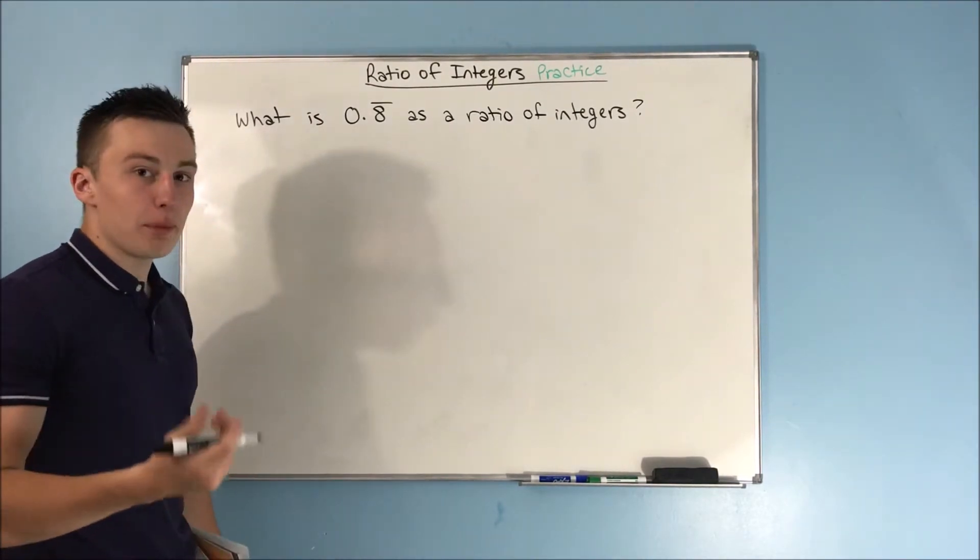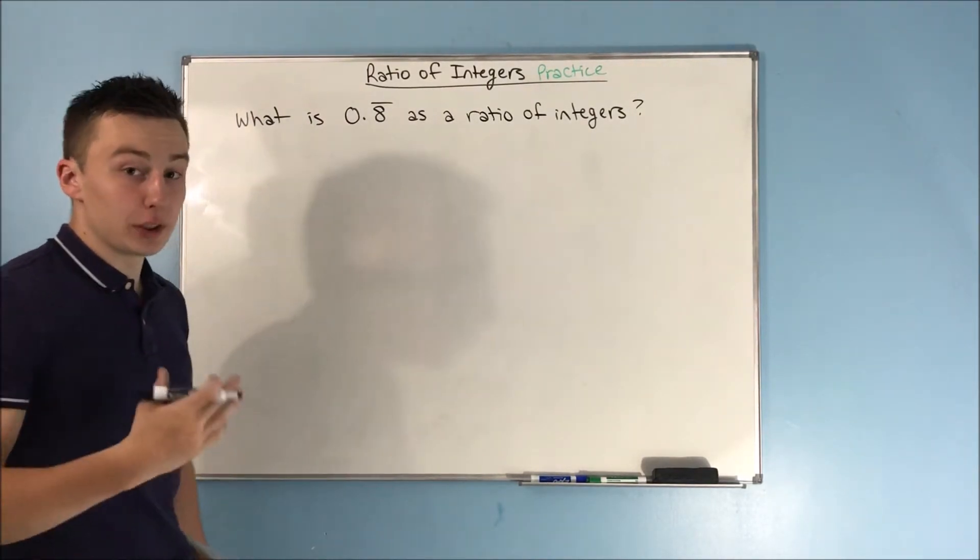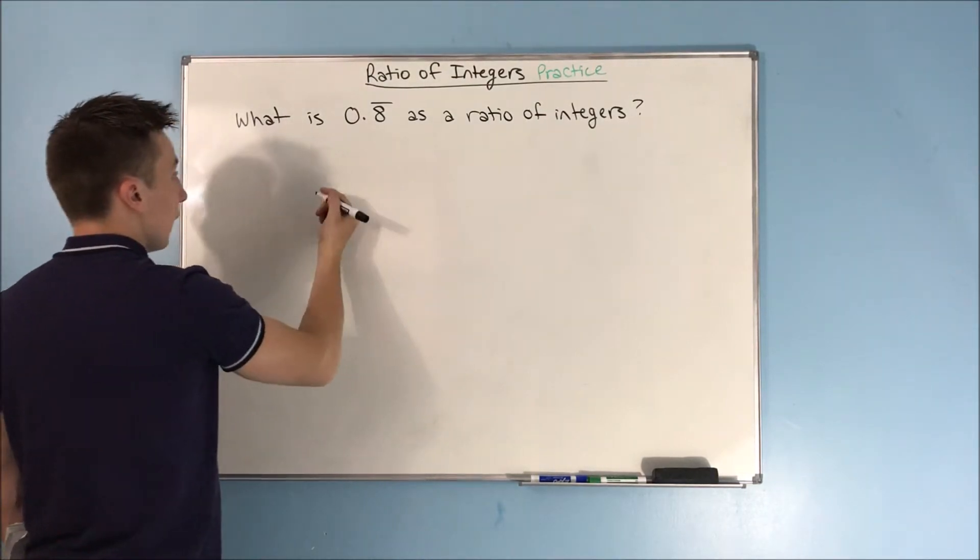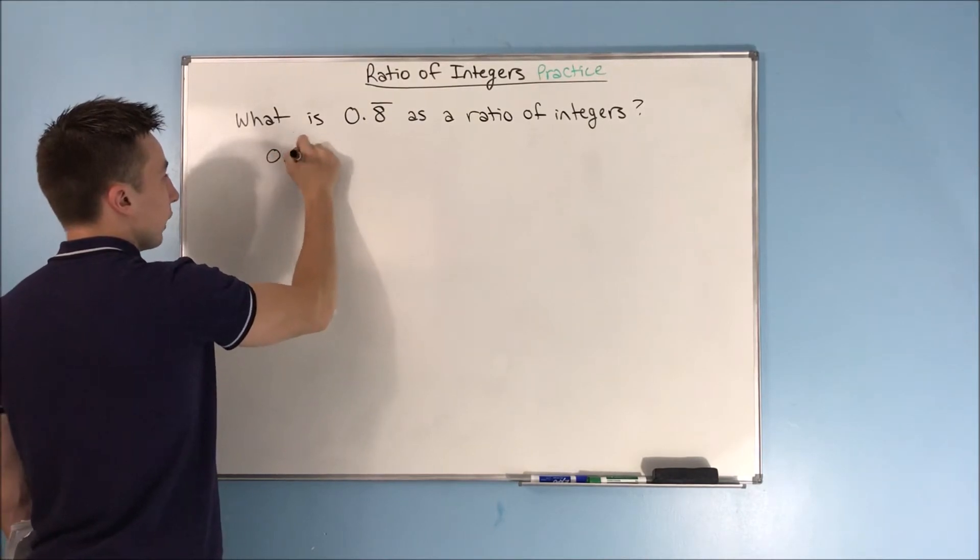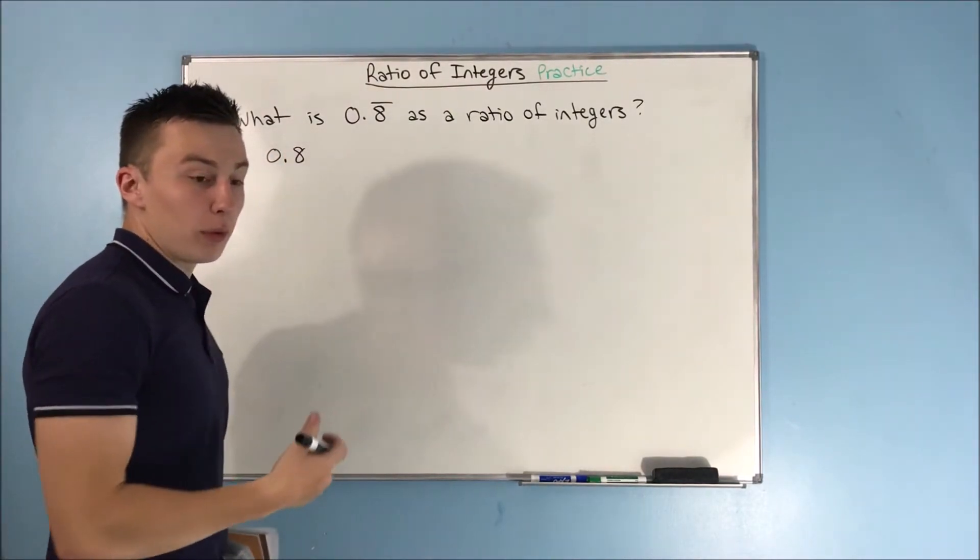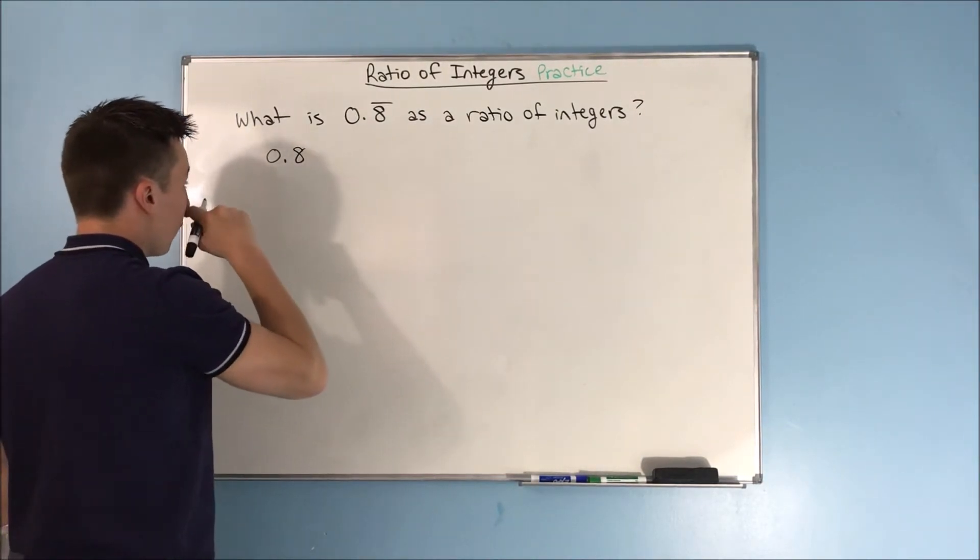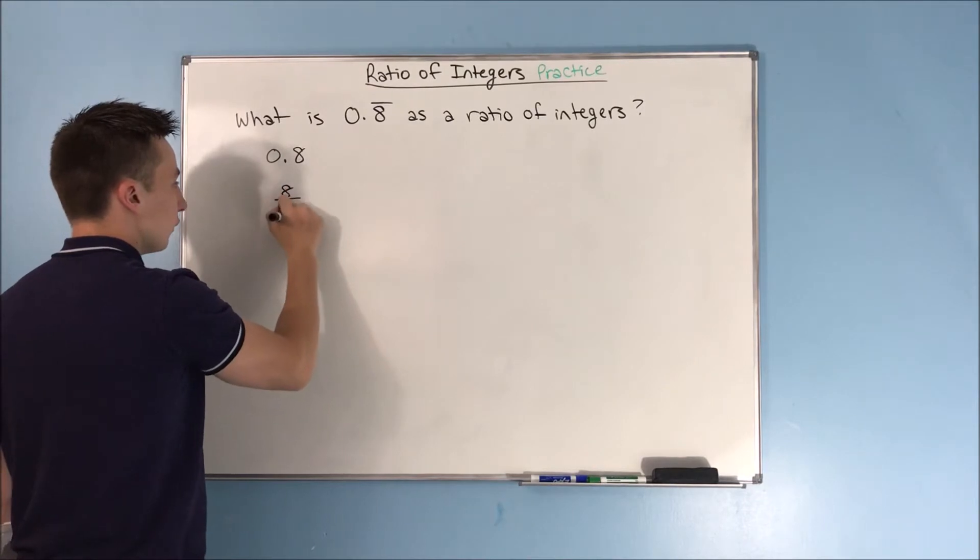The first step to this is writing 0.8 repeating out as an infinite geometric series. If you start writing this out, let's start out with just 0.8 and express that as a fraction. 0.8 is just 8 over 10, right?